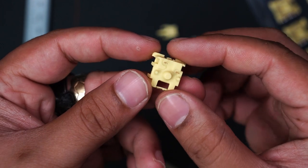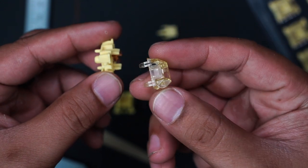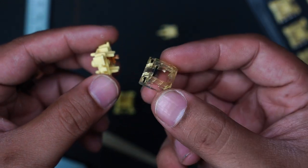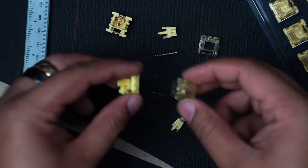The housing materials are also the same, where the top is PC and the bottom is Nylon PA. The difference now is that it has a cherry style housing compared to the kale style housing of the original.